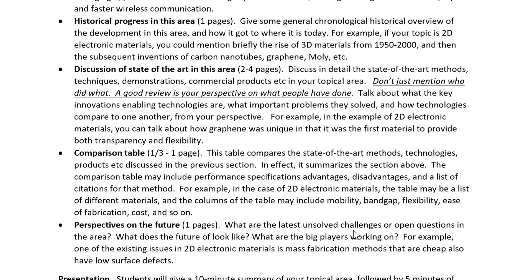Benchmarking means comparing technologies critically. The best way to do that is a benchmarking table: each row is one technology or approach, and the columns are different performance metrics. For 2D electronic materials, mobility would be one column. You compare materials' performance parameters — mobility, band gap, Young's modulus as a measure of flexibility, optical transparency, and working or processing temperatures.